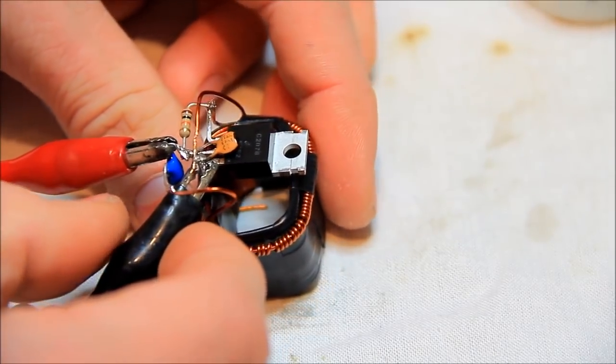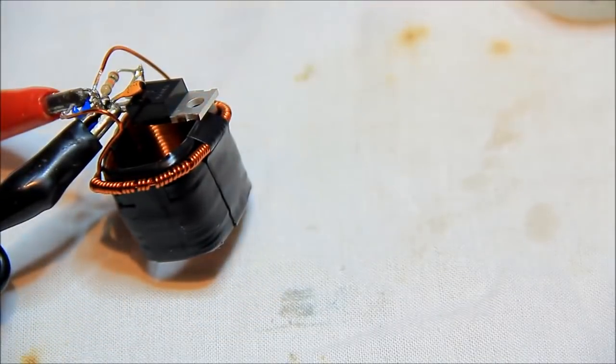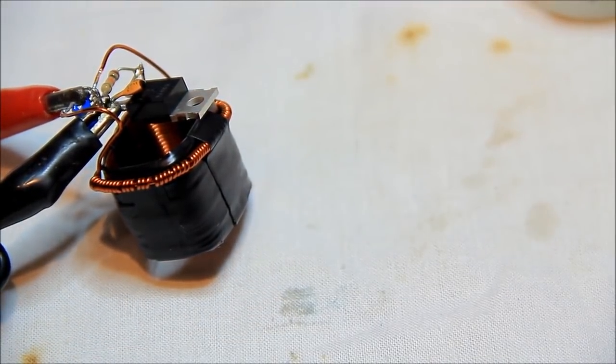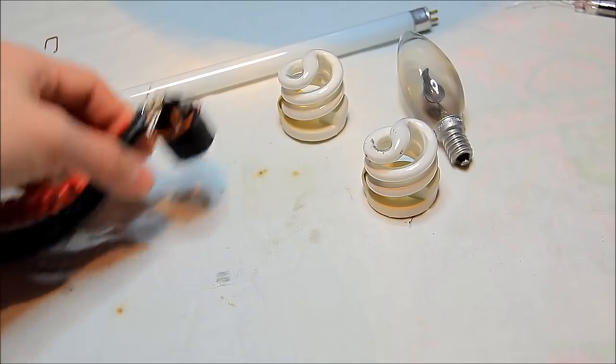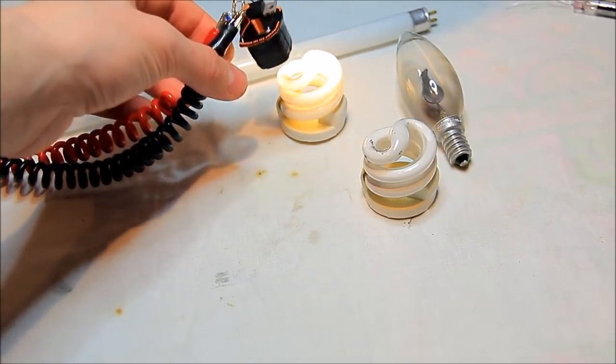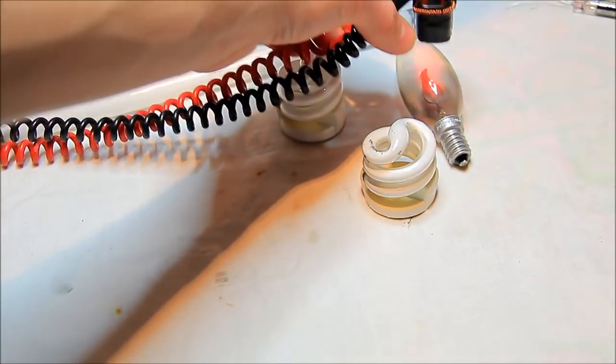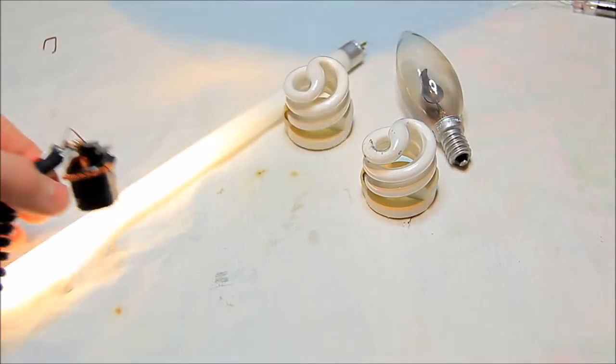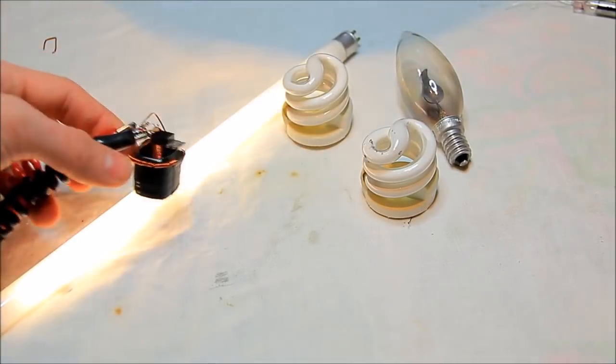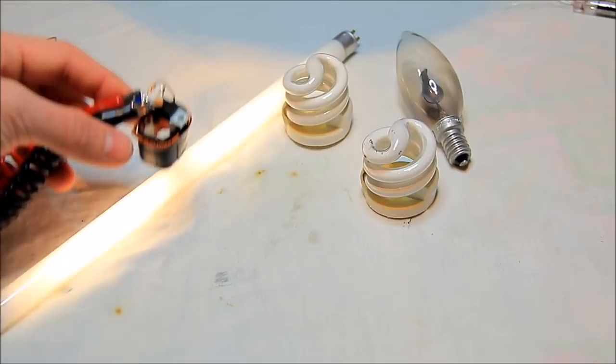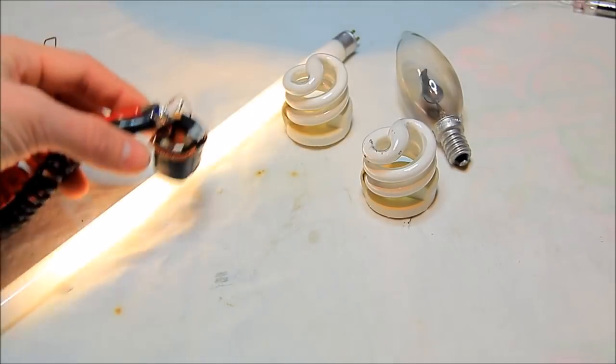And now you're able to light up some compact fluorescent lights. Let's start, and here small light bulbs, a neon light bulb and a big tube. It works very well.